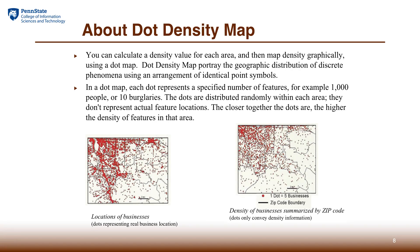So be careful when you try to interpret the map — read the title, read the legend, and see what the dot represents. In order to make a dot density map, you need to calculate the density first and create a new attribute on the map data. Then you can draw the map as dot density, choosing how many dots or what size of dots to use to represent the density idea.